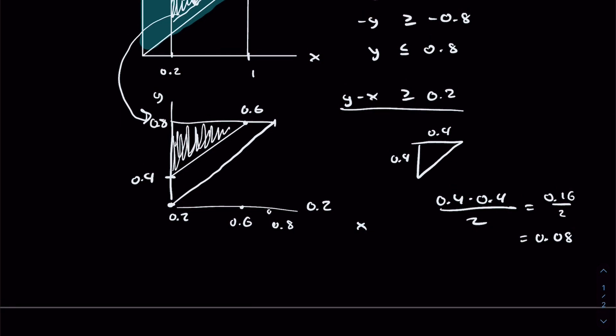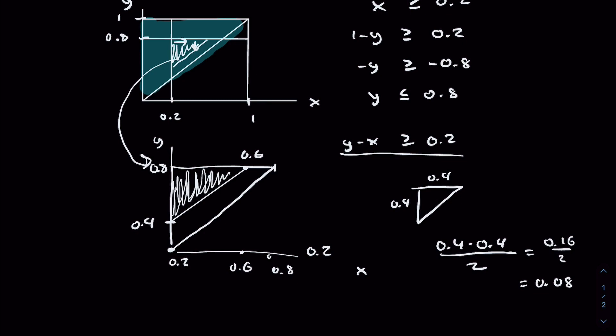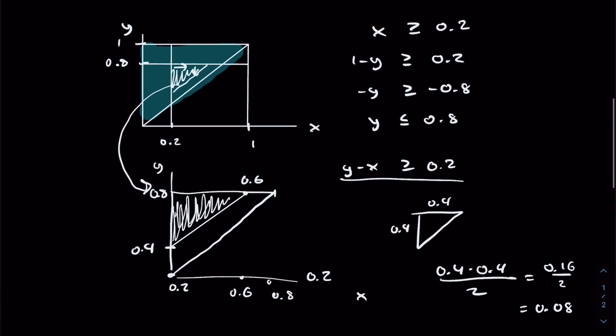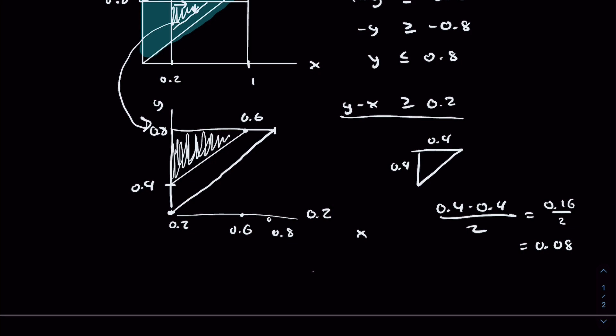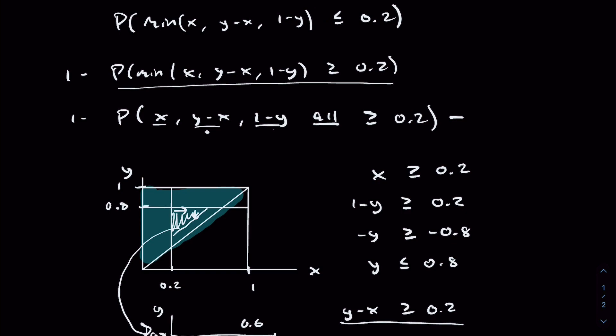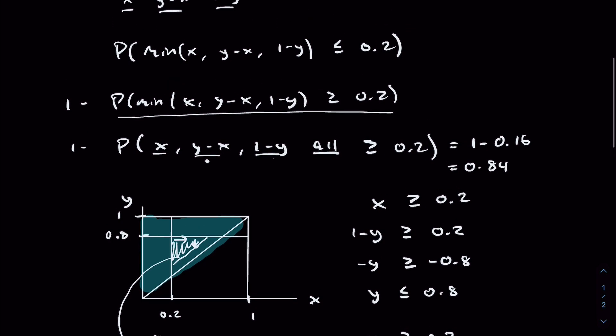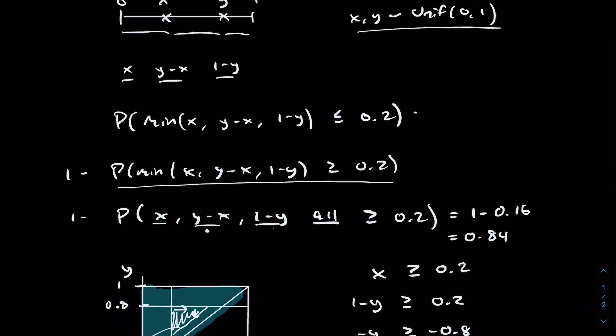That's the area of this shaded inner triangle. We now need to divide that by our entire outcome space, which we've defined to be this upper blue triangle. Half a unit square is just 0.5. It's just half of a 1 by 1 unit square. So we now divide 0.08 by 0.5 to get 0.16. So 0.16 is this expression right here. So we now have this equals 1 minus 0.16, or 0.84. And what did this entire expression mean? It was the probability that the minimum of the three lengths is less than or equal to 0.2. So we say it's 0.84.